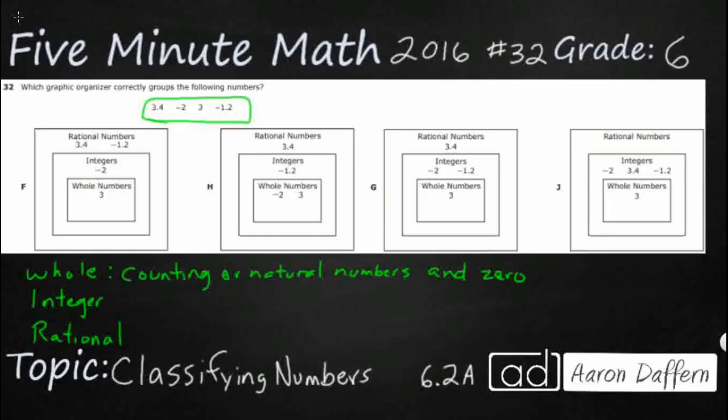So we don't typically teach kids how to count starting with 0, but 0 and then 1, 2, 3, 4, 5. So whole numbers, they're all positive, and there's no decimals.